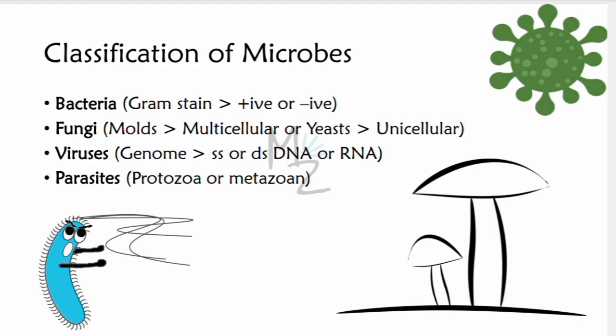Then we have viruses, which are further classified on the basis of genome. SS stands for single-stranded and DS for double-stranded. They are classified as single-stranded or double-stranded DNA viruses, or single-stranded or double-stranded RNA viruses. Then we have parasites, which are further classified as Protozoa and Metazoa — also called helminths, the worms. I have a complete video series on parasitology; its link is in the description and top right corner.